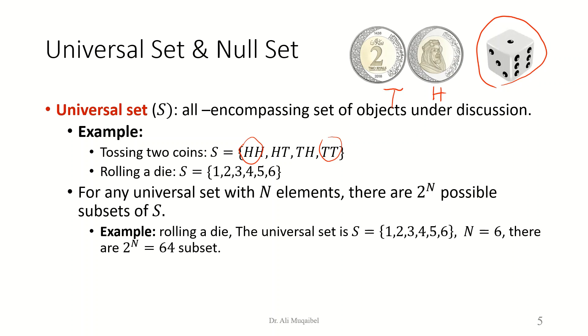Now for any universal set made of capital S elements, we have a certain number of elements, which is N. There are two to the power N possible subsets. So for example, if you look at rolling a die, there are capital N equal to six. You can create subsets out of this. Starting with the null set, you can have a set of just one element, or two, for example. You can have one and three. You can continue, and so on. And the number of possible subsets that you can create would be simply 64. Why? Because two to the power N, and N equal to six. So we have 64 possible outcomes.